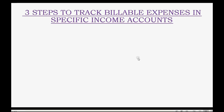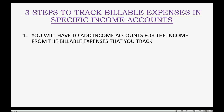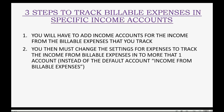There are three steps to set up QuickBooks Online to track billable expenses into specific income accounts. First, you will have to add the income accounts to the chart of accounts for the billable expenses you want to track. You then must change the settings for expenses to track the income from billable expenses in more than one account, instead of the default income account used in the previous video. We change the settings in the Account Settings window, just like we learned in an earlier video.